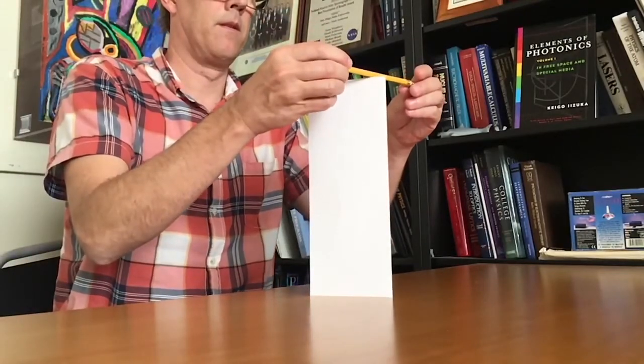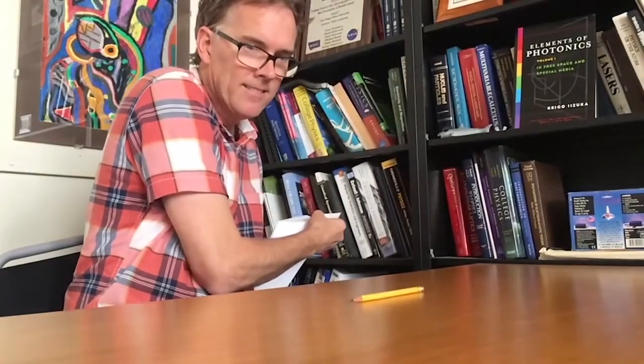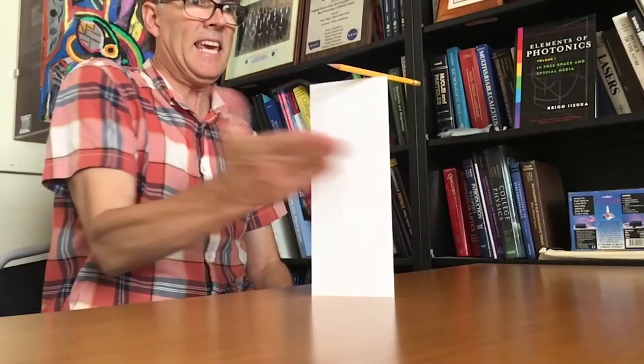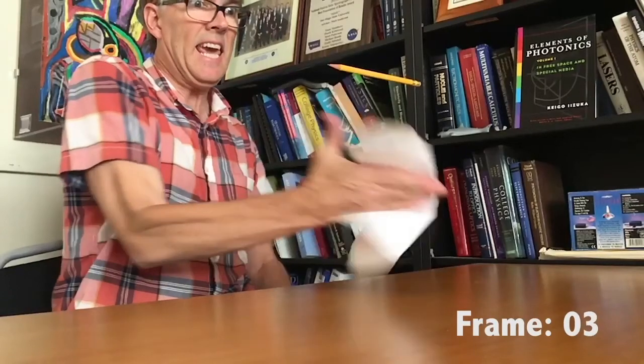The pencil is the object we're going to drop, and we need to carefully measure the time it takes to drop from a height of 11 inches. Set up your smartphone, put it on slow motion mode, and videotape somebody karate chopping the paper.